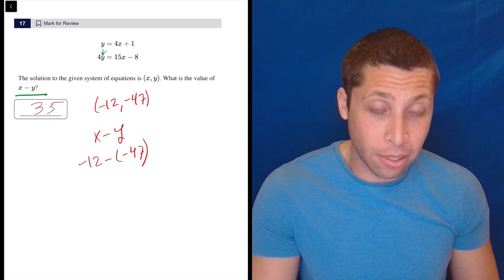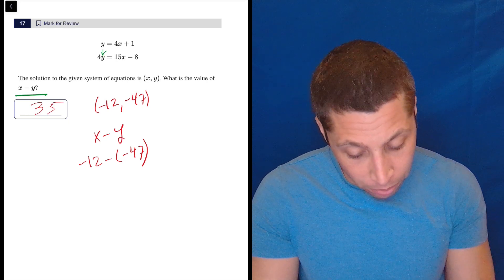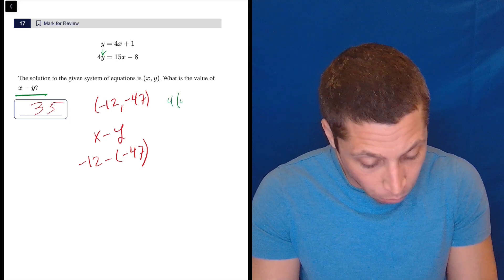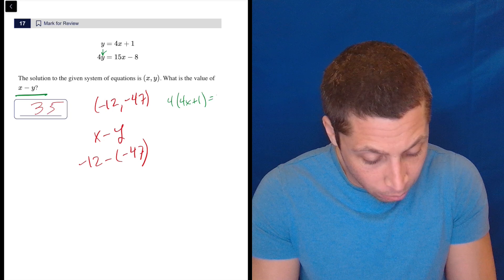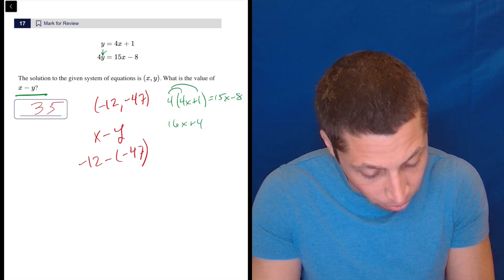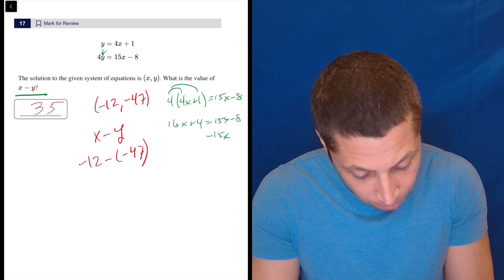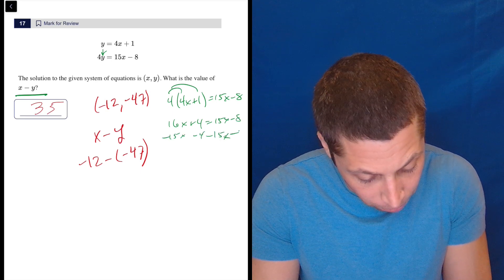So Y would go in place or 4X plus 1 would go in place of that Y and then we would solve. So we would have 4 times 4X plus 1 is equal to 15X minus 8. So that's 16X plus 4, right? Distribute equals 15X minus 8.